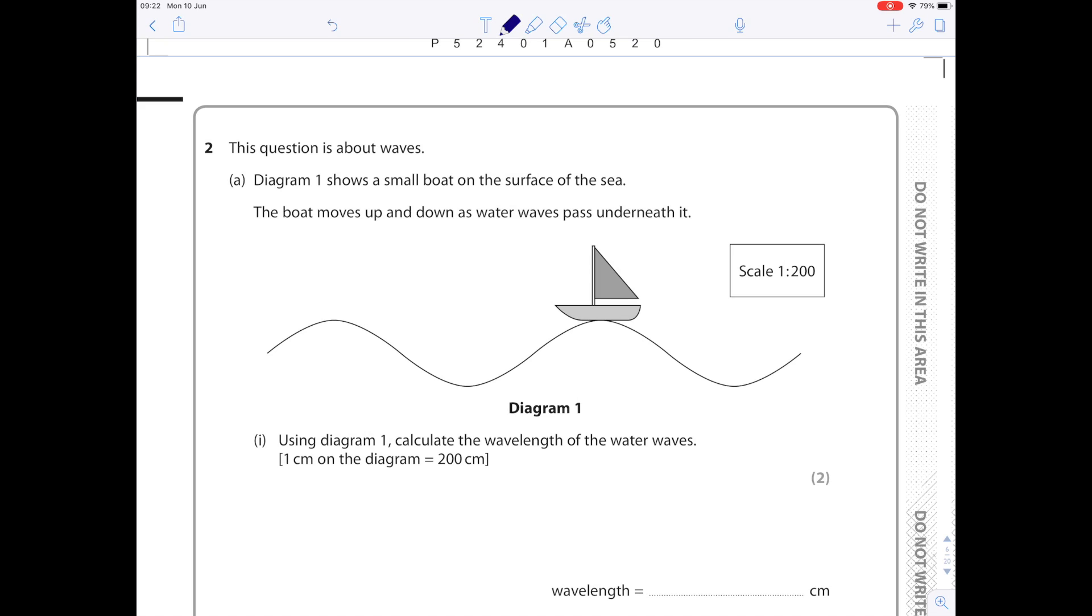This question is about waves. Diagram one shows a small boat on the surface of the sea. The boat moves up and down as water waves pass underneath it. Use diagram one to calculate the wavelength of the water waves. One centimeter on the diagram is 200 centimeters. First of all, let's mark on here what a wavelength is. It's from one peak to another peak, or trough to trough. Join together those two points and measure it with your ruler. Once you've measured accurately, it will be around seven centimeters. So one centimeter is 200 centimeters, so do seven times 200 to get 1400.